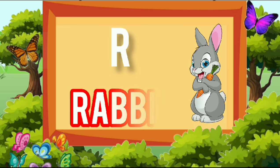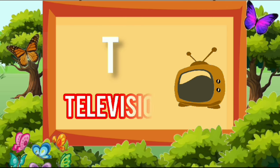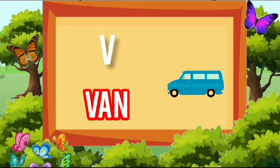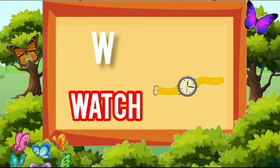R for rabbit, S for sheep, B for television, U for umbrella, B for van, W for watch.